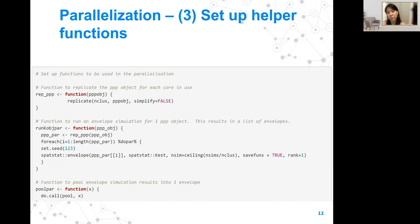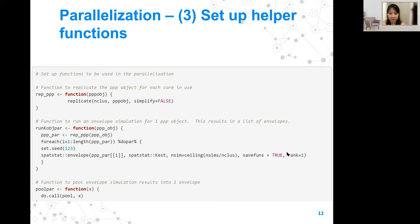We set up helper functions for parallelization. The first function replicates the PPP object for each core in use. The second function runs an envelope simulation for one PPP object and results in a list of envelopes. Essentially, we replicate the PPP object across all clusters, and for each object, run in parallel. We set the seed so we can replicate this, then run the envelope function using SpatStat's ks function with the number of simulations divided by the number of clusters, rounded up to the nearest integer.